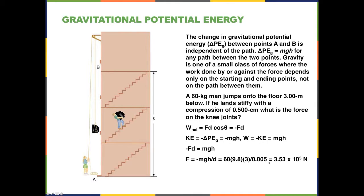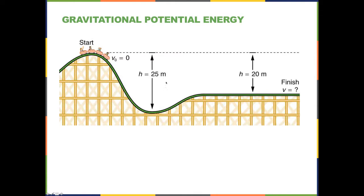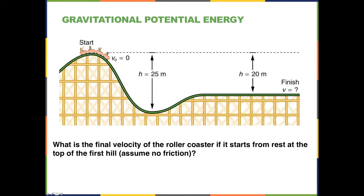Now let's go through the path independence carefully with a roller coaster problem, because at different points the potential energy changes and you need to track what you're solving for. You start with an initial velocity of zero and want to find the final velocity. What is the final velocity of a roller coaster starting from rest at the top of the first hill, assuming no friction? Notice no mass is given — there's a reason for that.